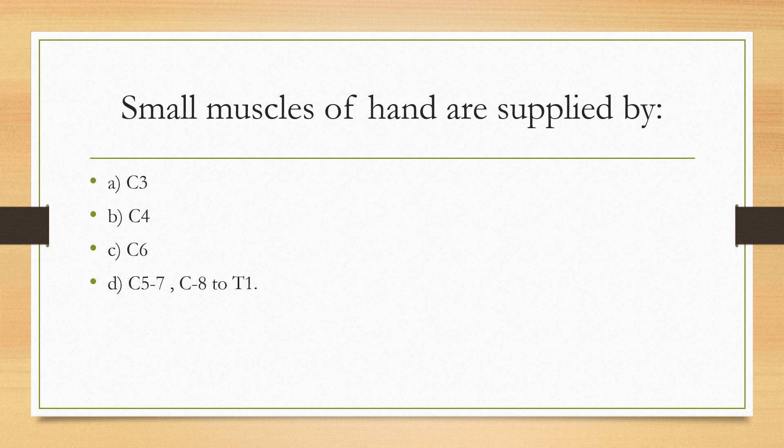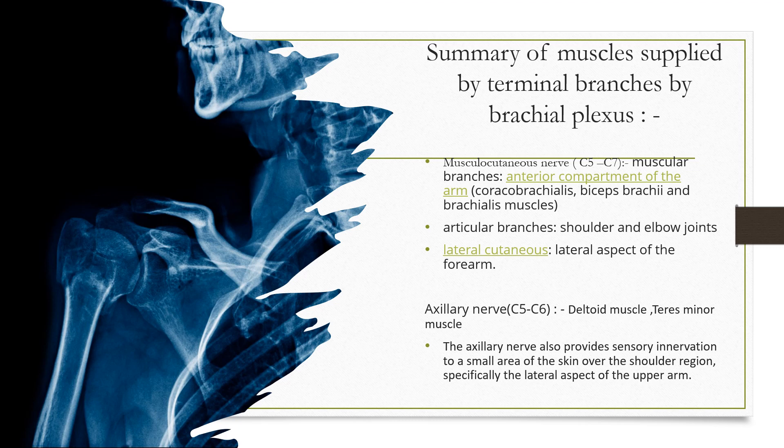In order to answer this question, we need to understand the muscles supplied by the terminal branches of the brachial plexus. We have five branches: the musculocutaneous nerve, axillary nerve, radial nerve, median nerve, and the ulnar nerve. We are going to discuss the motor supply of each of these nerves.